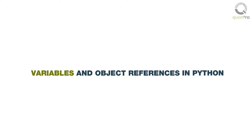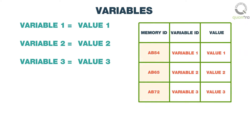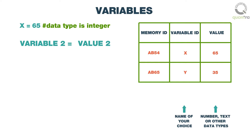Now let us get into the real thing. What are variables and object references in Python? A variable is something that can change. It is a way of referring to a memory location used by our computer program. These memory locations can help you store values such as numbers, text, or other data types. You can assign a name of your choice to access these stored values in your program. For example, x equals 65 and y equals 35.